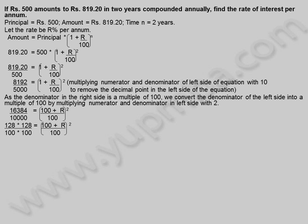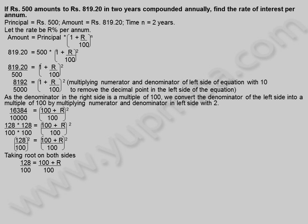128 into 128 divided by 100 into 100 is equal to 100 plus r divided by 100 whole square. So 128 by 100 whole square equals 100 plus r by 100 whole square. Taking root on both sides: 128 by 100 is equal to 100 plus r divided by 100. Therefore 128 is equal to 100 plus r, so rate is equal to 128 minus 100, which gives rate equal to 28 percentage.